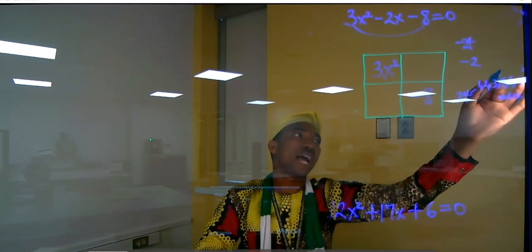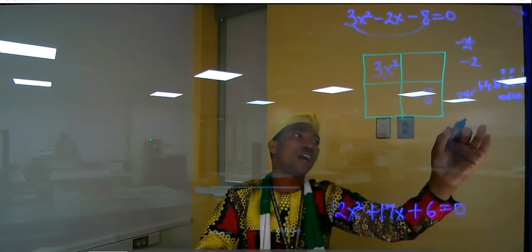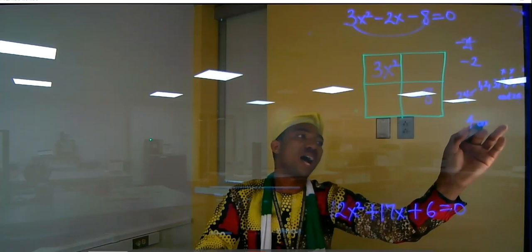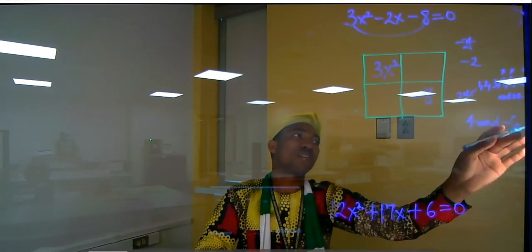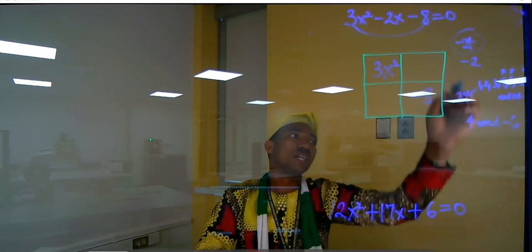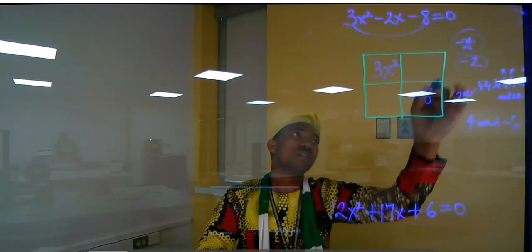Pick any of the two factors. I can pick 4 and 6. So if I pick 4 and 6, that would be 4 and minus 6. 4 multiplied by minus 6 gives me minus 24. Then 4 minus 6 gives me minus 2.